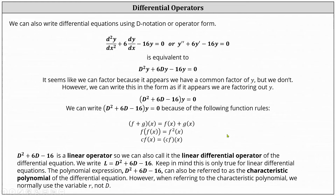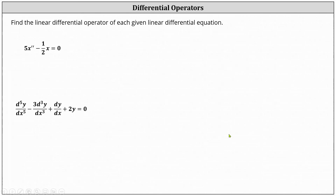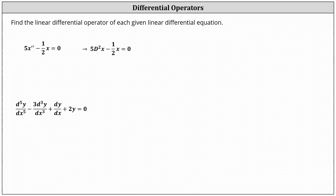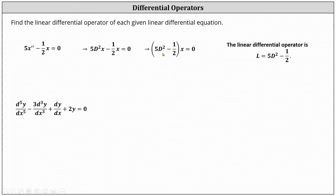Let's take a look at two examples. We're asked to find the linear differential operator of each given linear differential equation. For the first differential equation, we have five x double prime minus one half x equals zero. Using capital D notation, we can write this as five capital D squared x minus one half x equals zero. It appears as if we can factor out a common factor of x, but we can't — however, we can still write it as if we have a common factor of x: five D squared minus one half, applied to x equals zero. This indicates the linear differential operator is L equals five capital D squared minus one half.